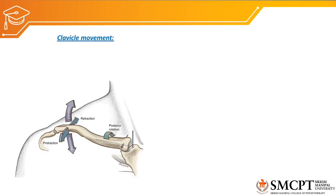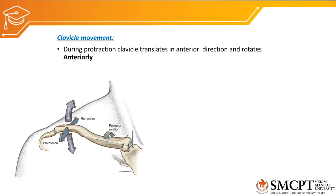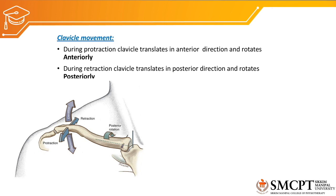Now let's check the clavicular movement during protraction and retraction. During protraction the clavicle translates in the anterior direction and rotates anteriorly, and during retraction the clavicle translates in the posterior direction and rotates posteriorly. So there are two movements occurring at the sternoclavicular joint and at the acromioclavicular joint due to which the clavicle translates and rotates anteriorly during protraction and posteriorly during retraction.